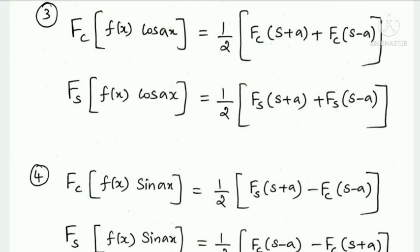Fourier cosine transform of f(x)·cos(ax) equals (1/2) times [Fourier cosine transform of (S+a) plus Fourier cosine transform of (S−a)]. Fourier sine transform of f(x)·cos(ax) equals (1/2) times [Fourier sine transform of (S+a) plus Fourier sine transform of (S−a)].